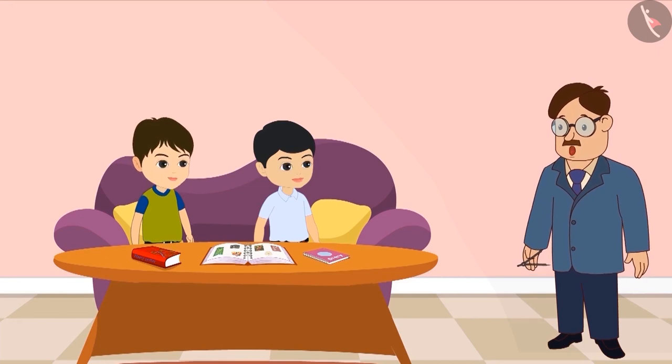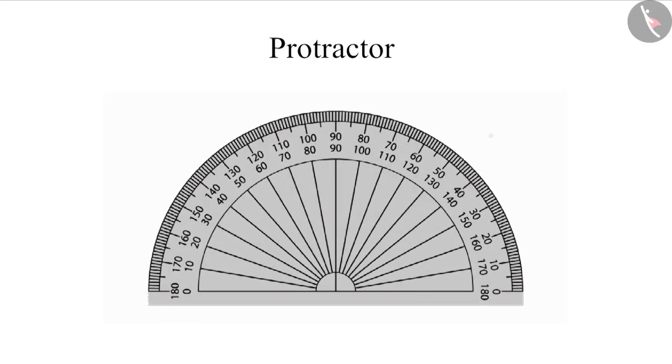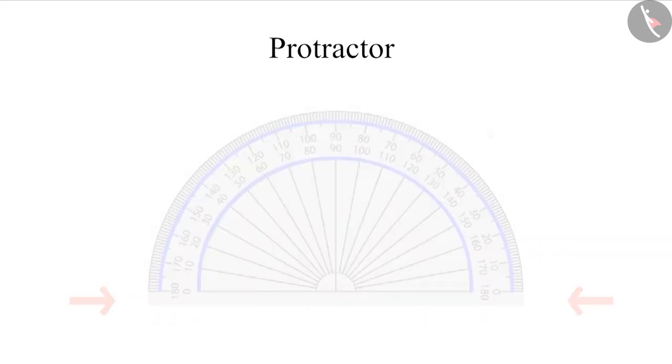In your geometry box, you will find a protractor. It has numbers from 0 to 180 on both sides from right to left and left to right. In this way, we can measure the angle from both sides using the protractor.